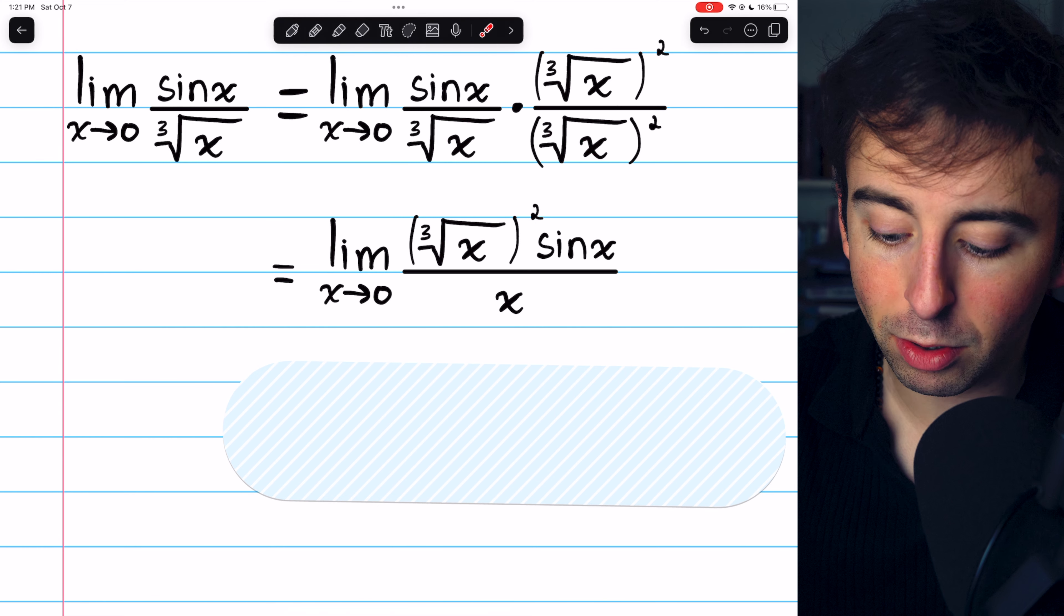Now, we know sine x over x, as x approaches 0, is just 1. And on the left, the cube root of x squared, we can just substitute 0 into that to evaluate the limit, and we find,